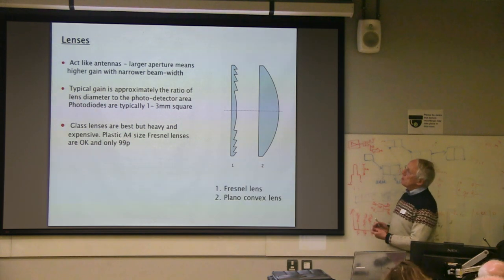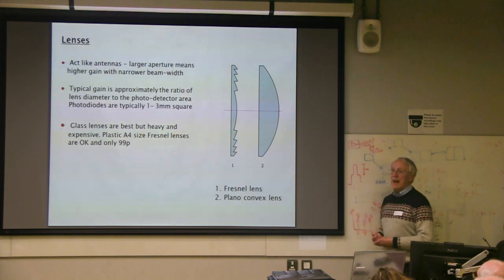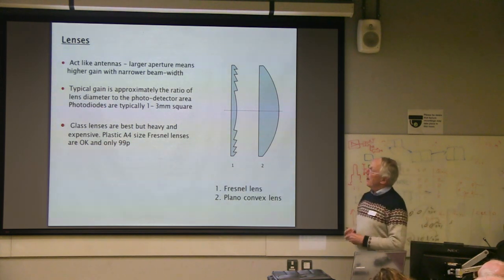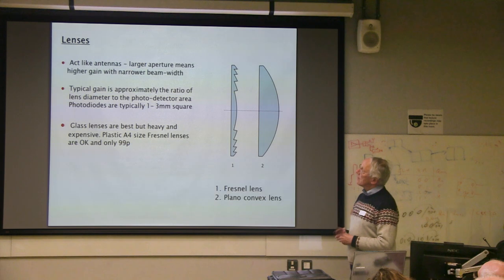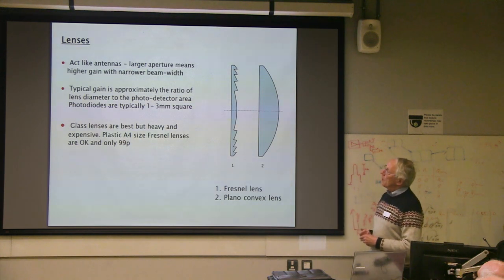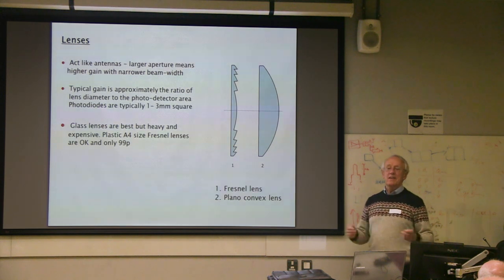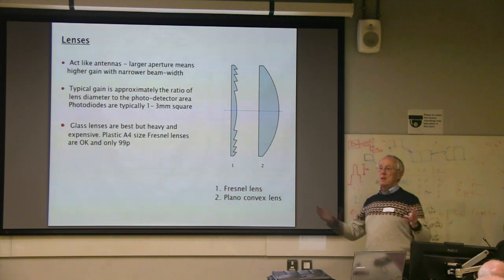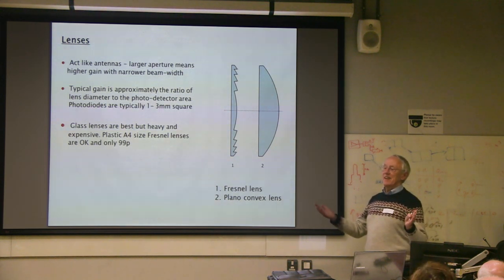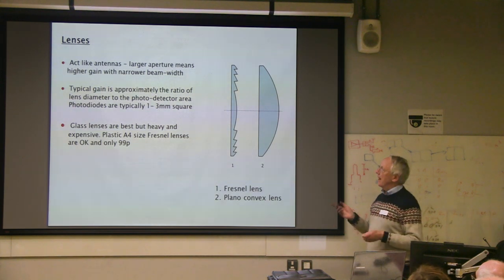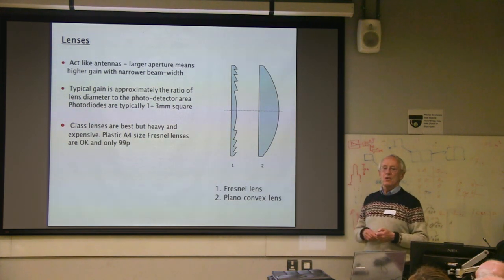Now let's talk about antennas. We use lenses, but the same rules apply: the bigger the aperture of the antenna, the more gain it has and the narrower the beam width. That's fairly true for optics as well.